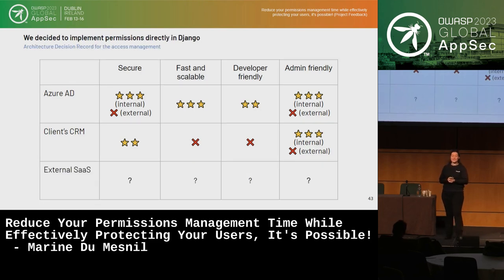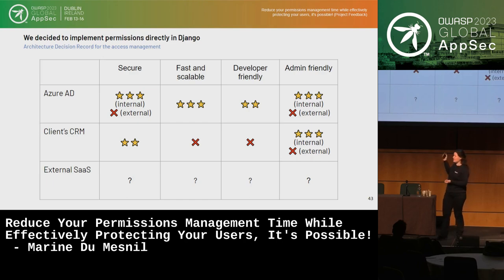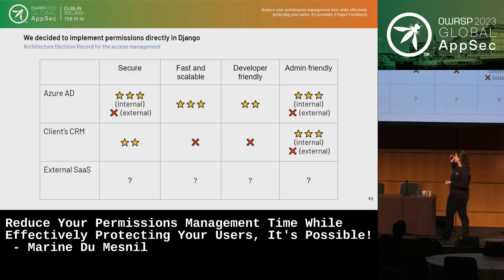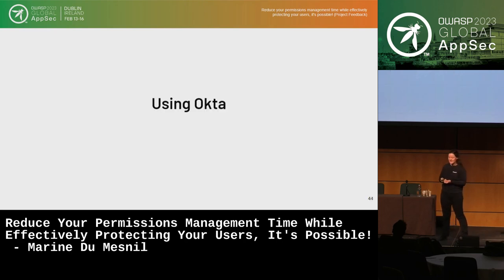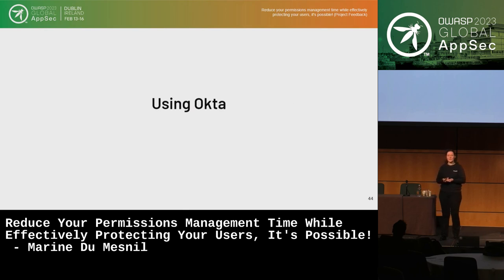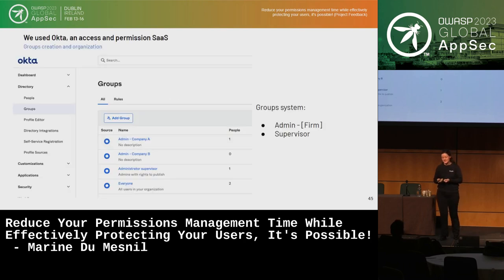So we decided to implement permissions not directly in Django, but in an external SaaS. We decided to use Okta, and now I'll talk about why we used it and what challenges we faced.